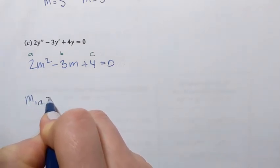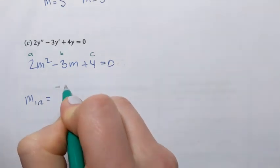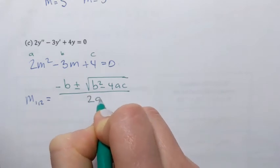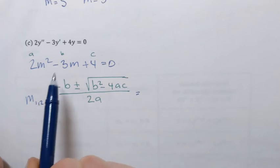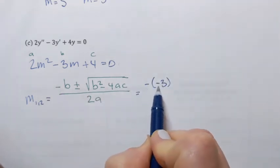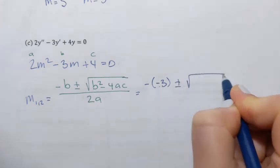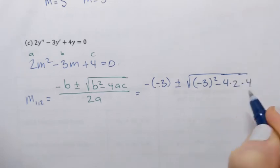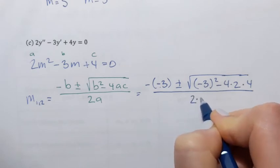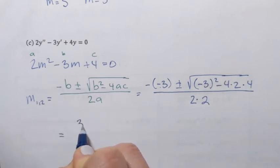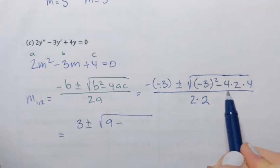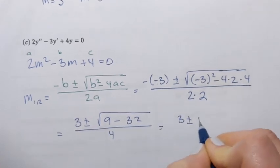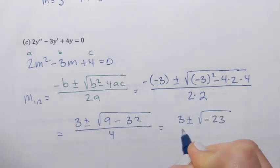To apply the quadratic formula, I identify the constants a, b, and c, then find solutions m1 and m2. The quadratic formula is negative b plus or minus square root of b squared minus 4ac, over 2a. Plugging in: negative of negative 3, plus or minus square root of negative 3 squared minus 4 times 2 times 4, over 2 times 2. Simplifying: 3 plus or minus square root of 9 minus 32, over 4, which gives 3 plus or minus square root of negative 23, over 4.